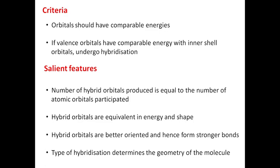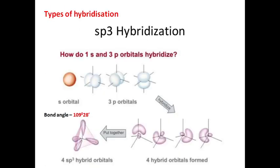The type of hybridization determines the geometry of the molecule. Let us discuss the types of hybridization with examples. We are going to discuss SP3 hybridization, where the superscript 3 indicates the number of P orbitals involved.